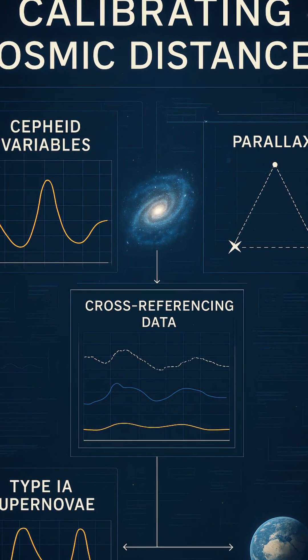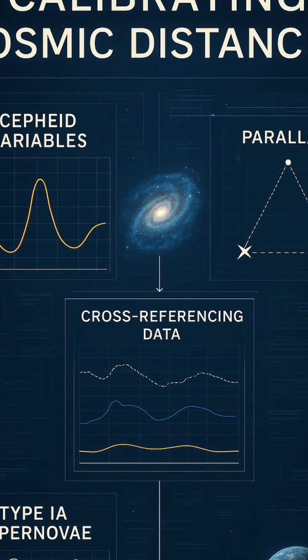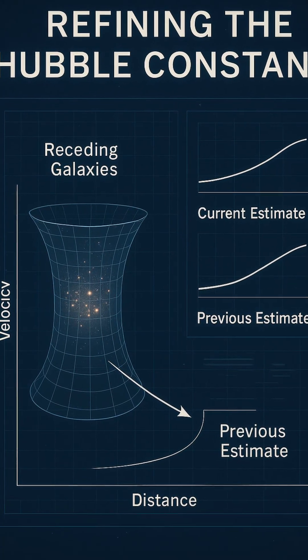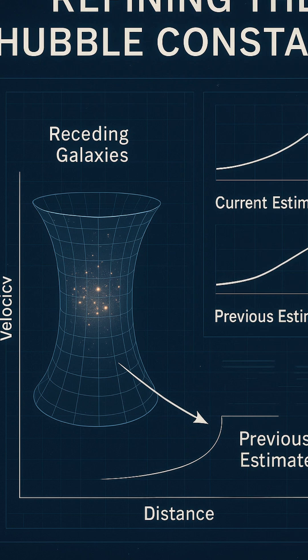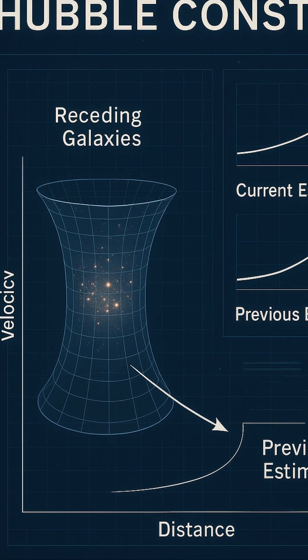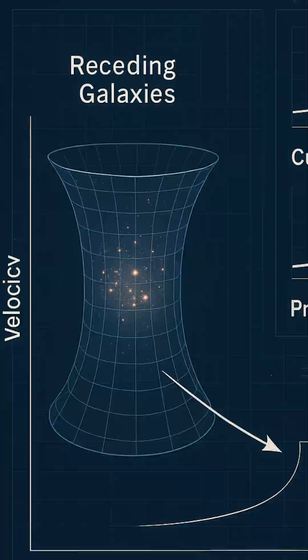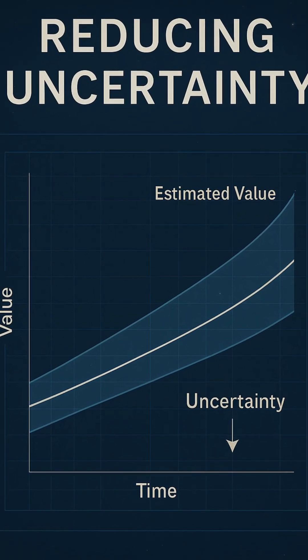This method has proven invaluable for mapping the expanding universe and determining how fast it's growing. But accuracy in these measurements depends on cross-checking methods. Astronomers compare Cepheids and supernovae with geometric techniques like parallax for nearby stars, or surface brightness fluctuations, and even gravitational lensing.